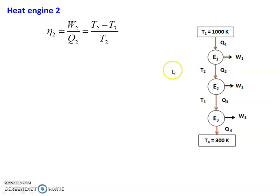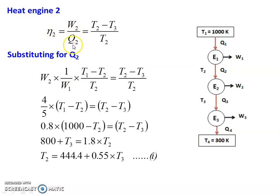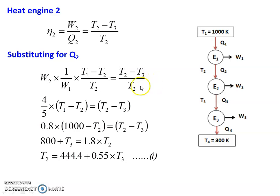Now, for engine number 2: Eta 2 equal to W2 by Q2, which equals T2 minus T3 divided by T2. Substituting for Q2 — Q2 equal to W1 into T2 divided by T1 minus T2 — and substituting into the efficiency equation, with T2 cancelling: W2 by W1 equal to T2 minus T3 divided by T1 minus T2. Since W1 by W2 equals 5 by 4, W2 by W1 equals 4 by 5, giving 0.8 into T1 minus T2 equal to T2 minus T3.